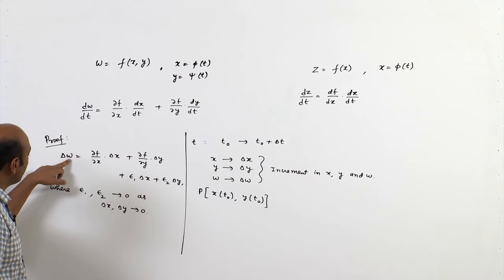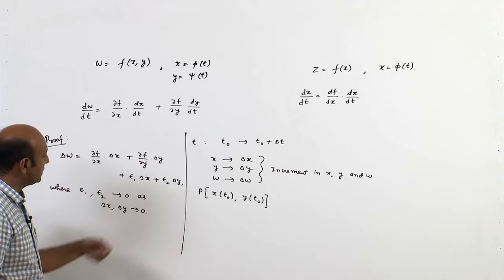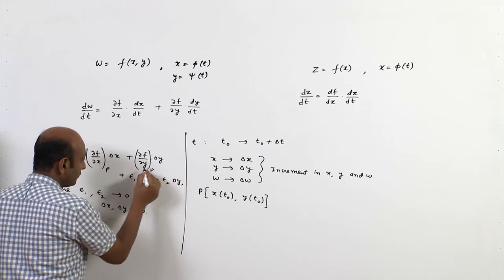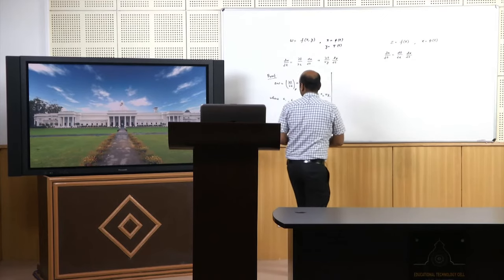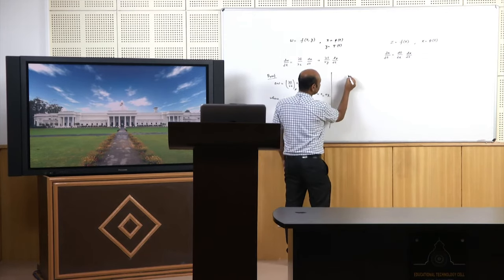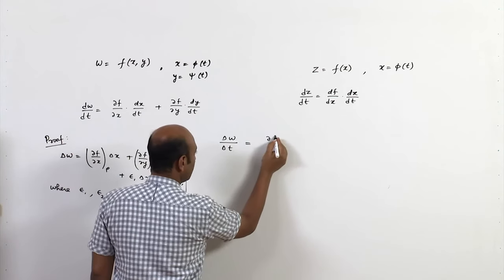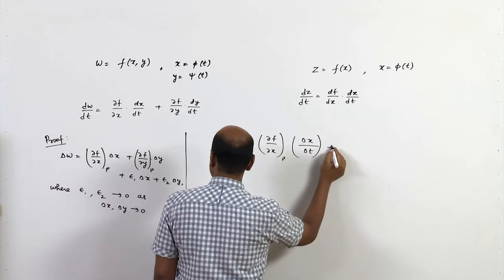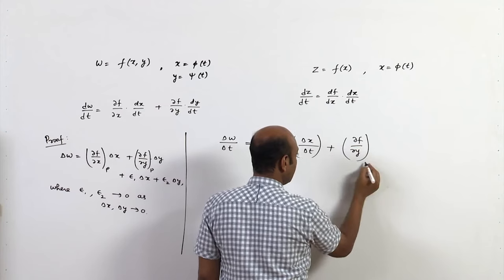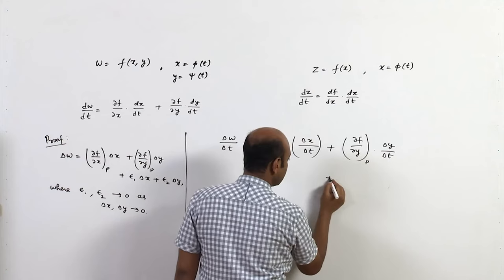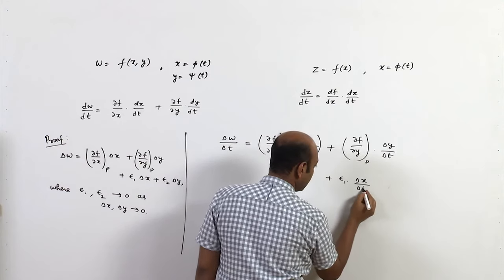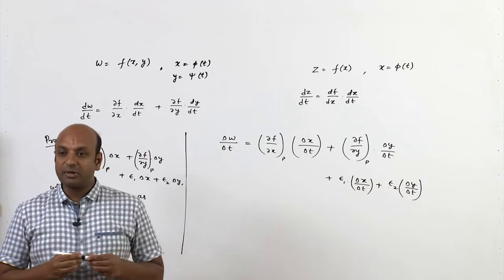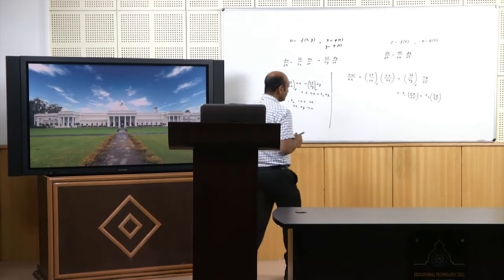We evaluate Δw at point p. Dividing the entire expression by Δt, we obtain: Δw/Δt = (∂f/∂x)|_p · (Δx/Δt) + (∂f/∂y)|_p · (Δy/Δt) + ε₁(Δx/Δt) + ε₂(Δy/Δt).